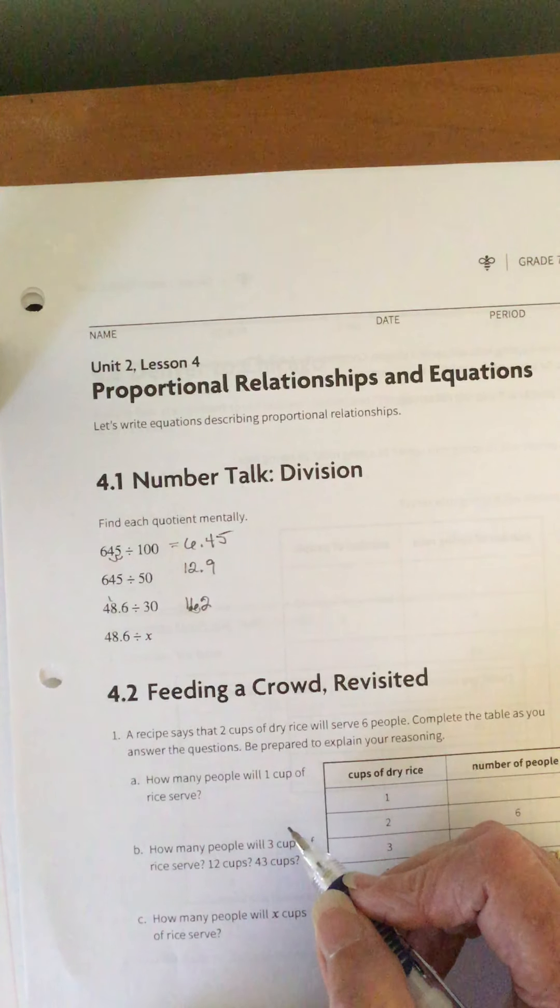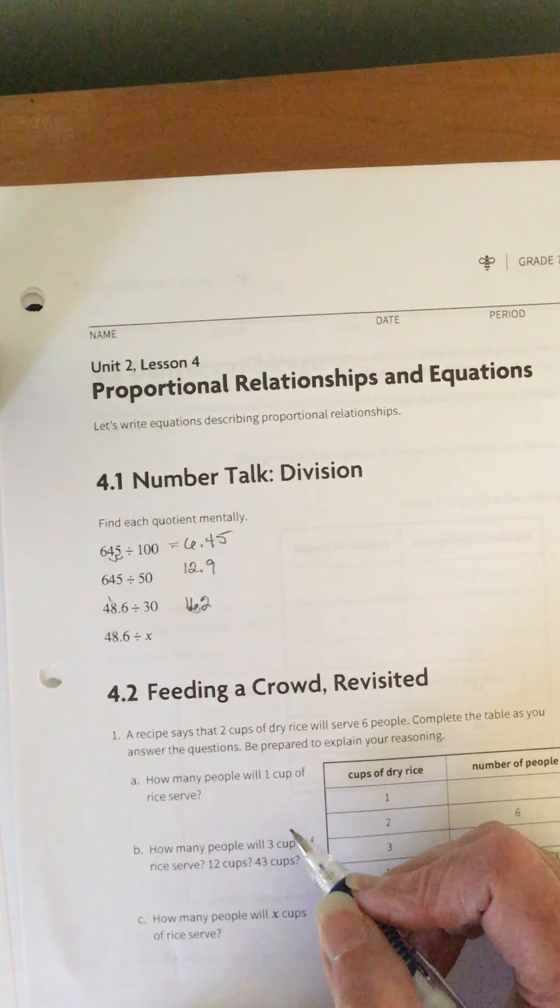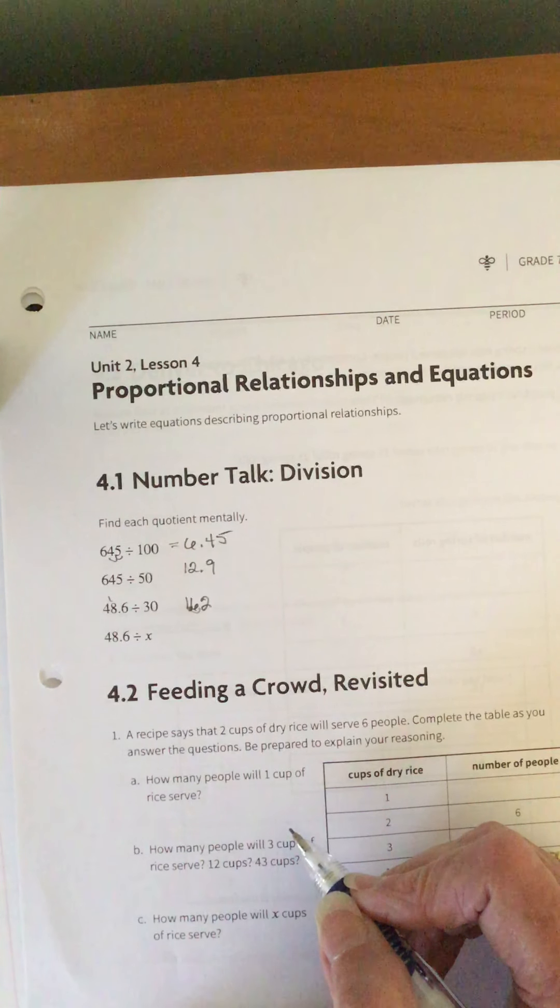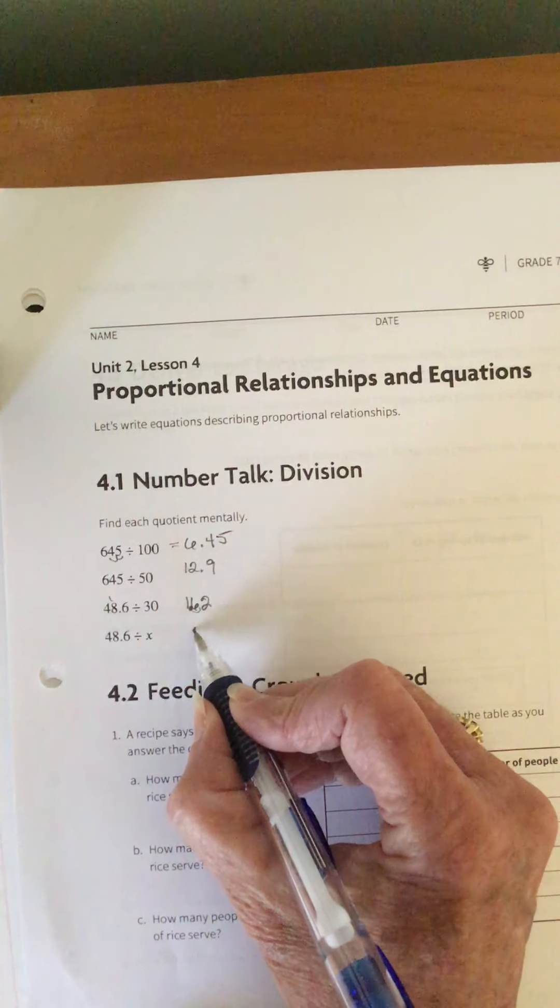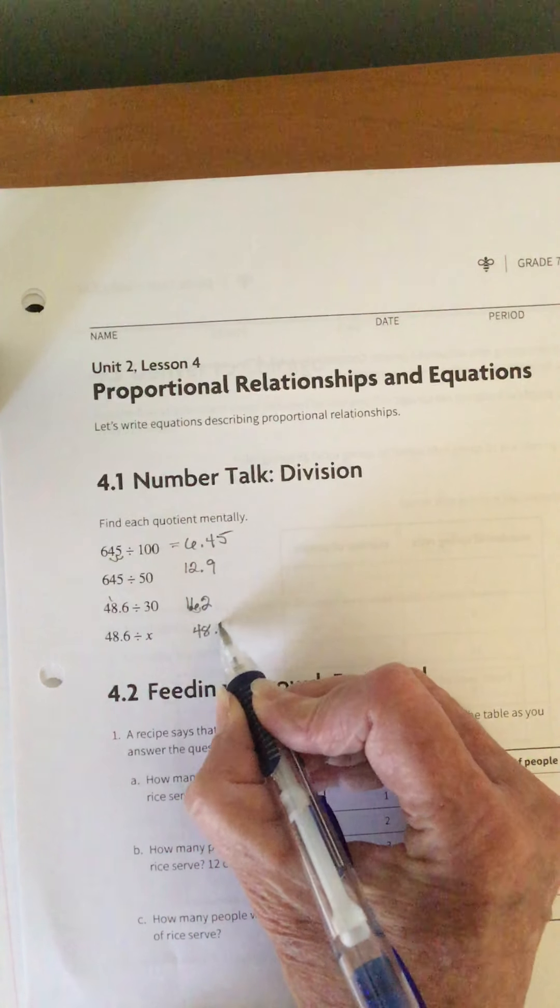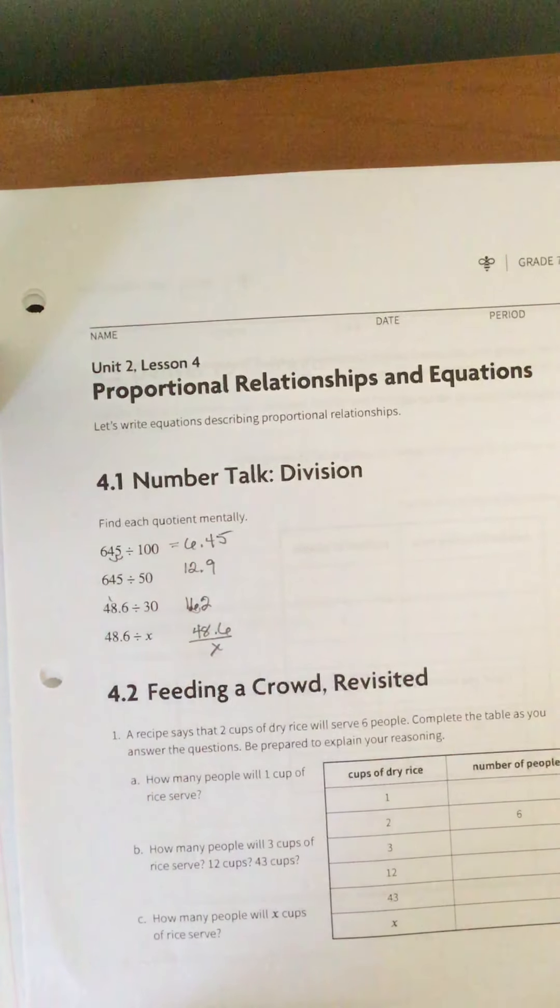Then we got 48.6 divided by X. Hmm. Well, divided by any number. So 48.6 divided by X. I could write it like that.